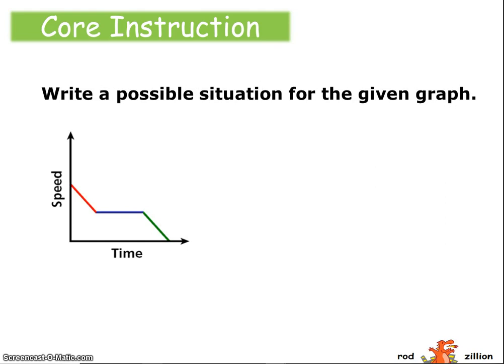What we're going to do is create a situation to match the graph given. So in this graph, we're looking at the change of speed compared to time. It appears the speed decreases at some point, then it stays constant for some point only to decrease again. So think of a situation where that might be the case. Here's one example.